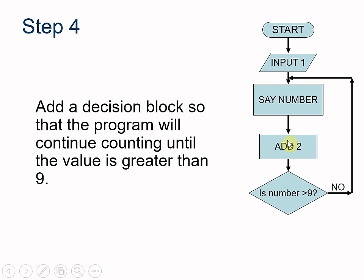It's going to add 2 more. It gives us 5. Is that greater than 9? No. So it's going to go back and say the number 5. It's going to add 2. Is that number greater than 9? No. Now we're at 7. So we go back and we say the number 7. We add 2 more and we get to 9.